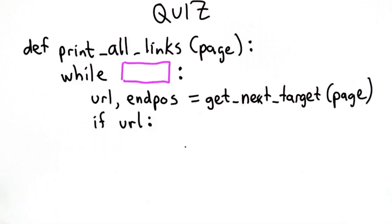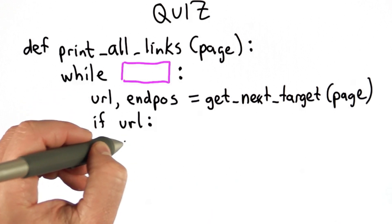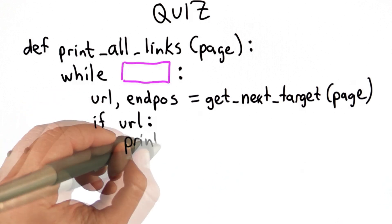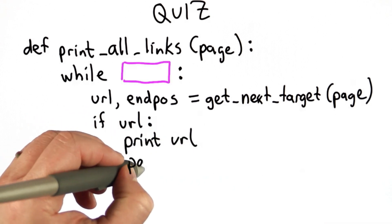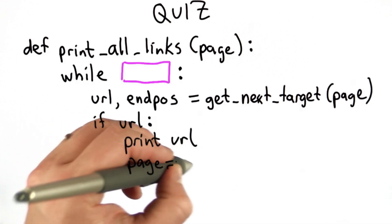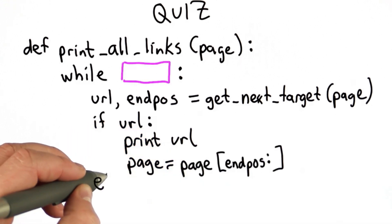So we're going to have if URL. And if that's true, that means we found a valid URL. We didn't get the value none as the result from getNextTarget. And so we want to print that out as we were doing before. We'll print the URL, and we'll advance the page to the next position.